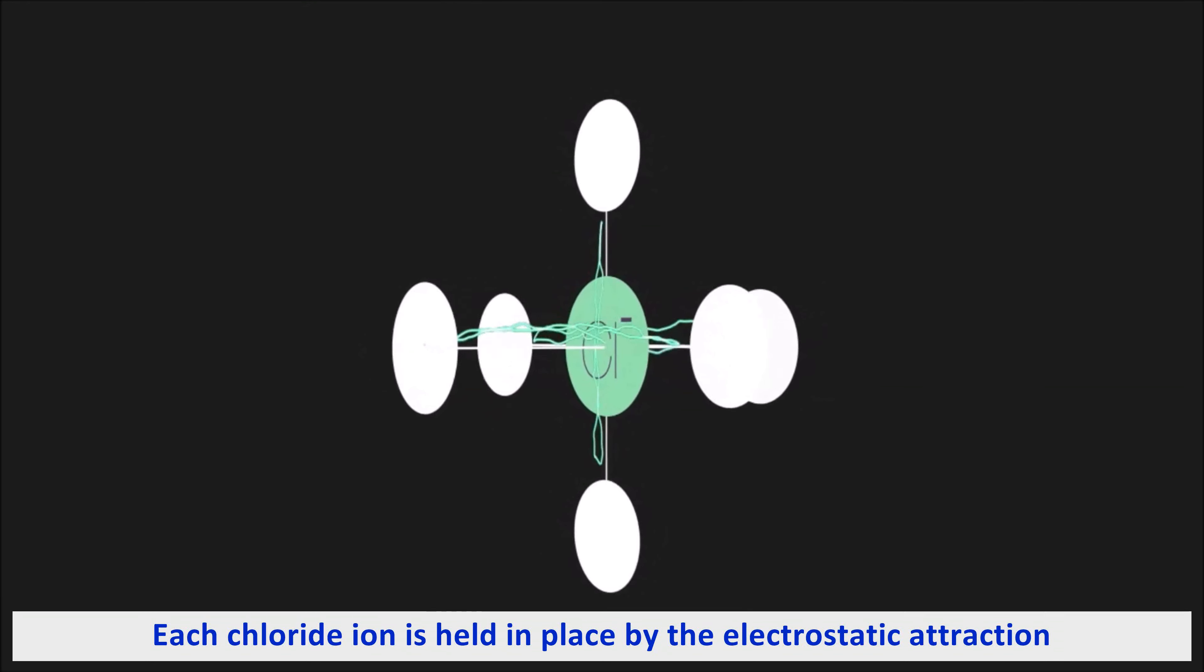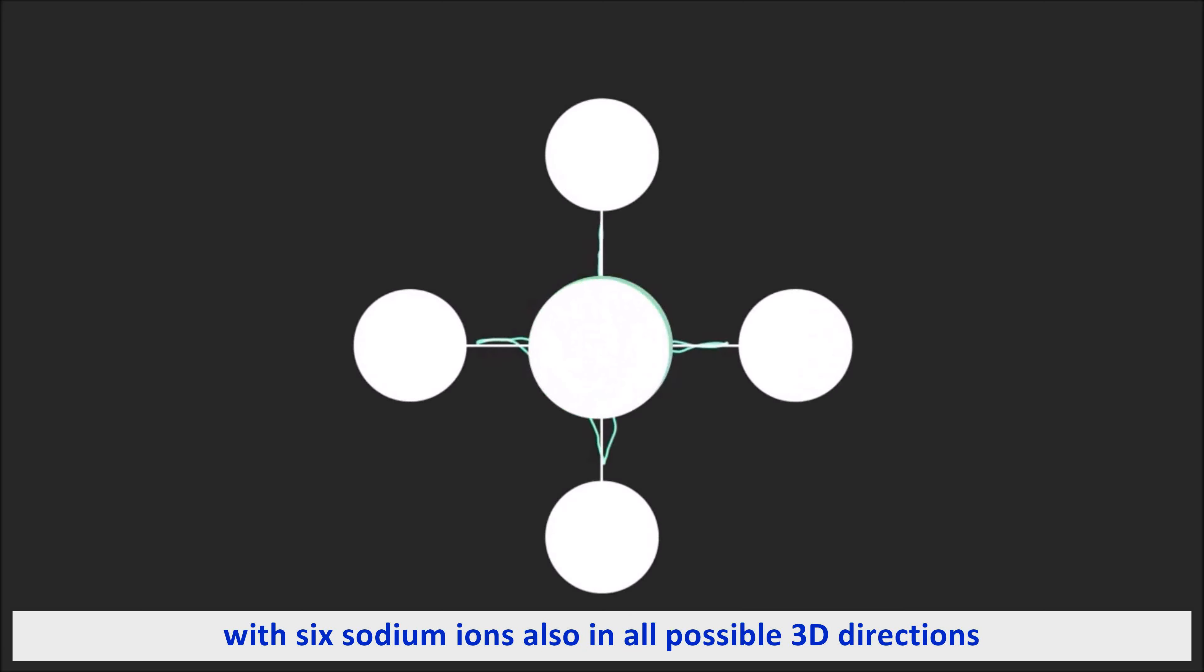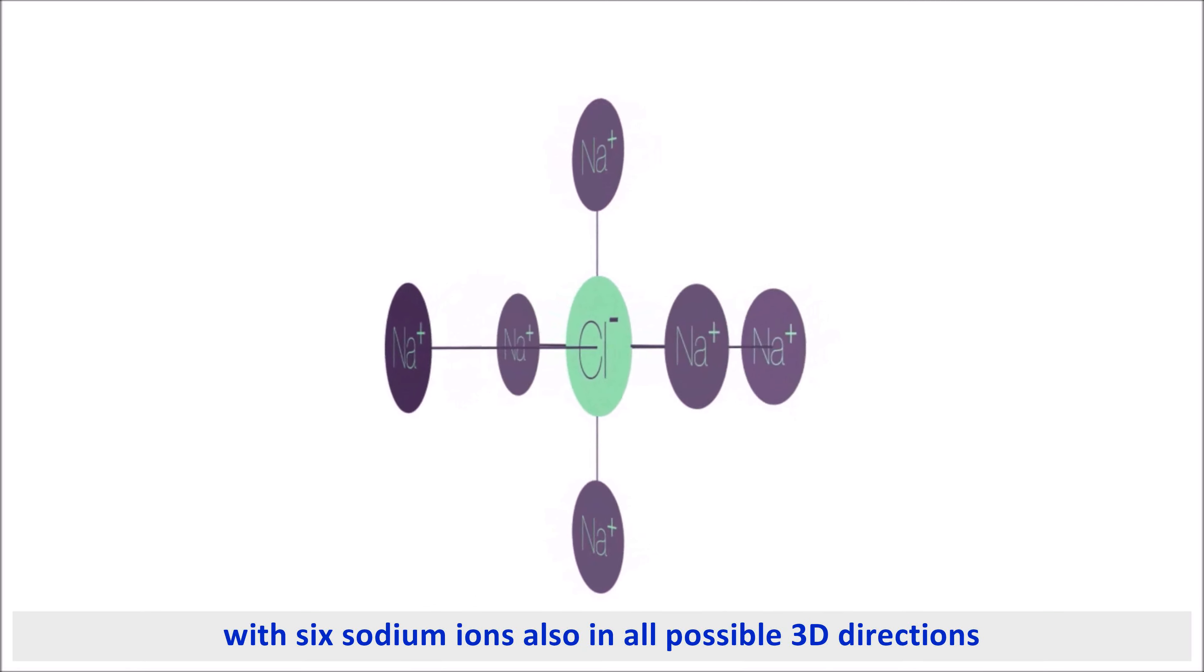And similarly, each chloride ion is held in place by the electrostatic attraction of six sodium ions, also in all possible 3D directions.